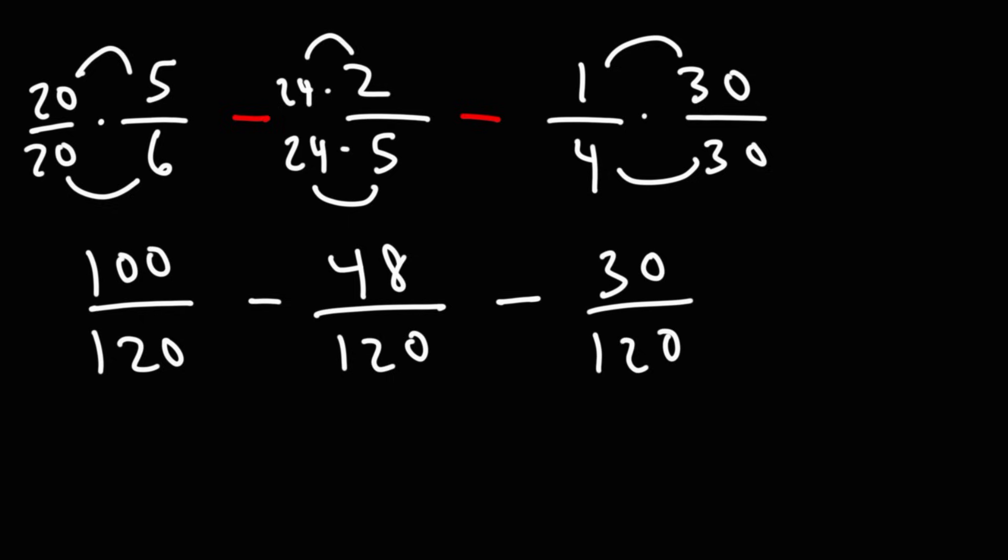So now, all we need to do is subtract the numerators. 100 minus 48 is 52. 52 minus 30 is going to be 22.